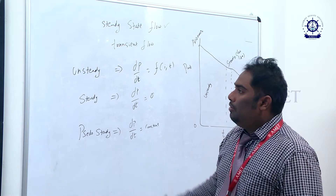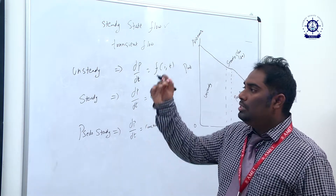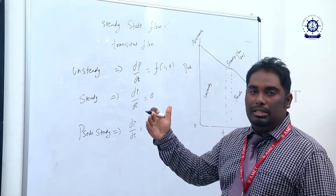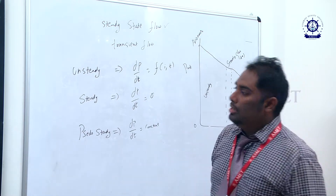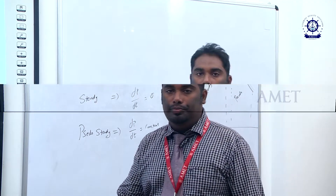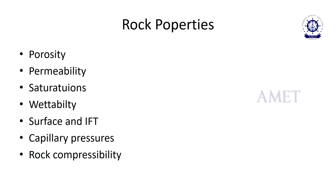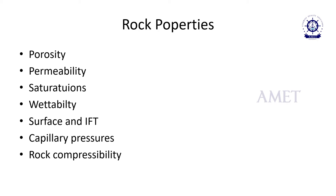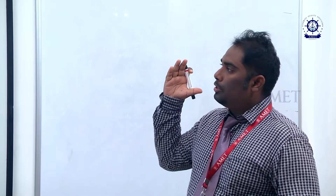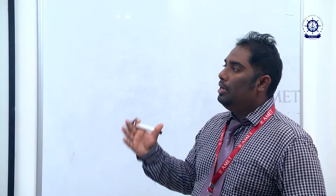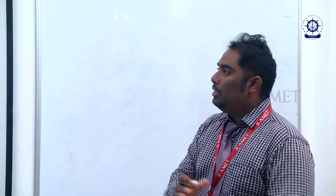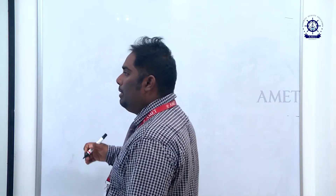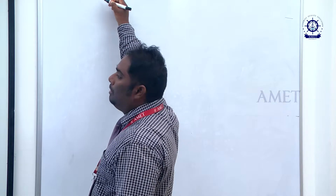This is how the flow regimes occur inside a well — unsteady state starts first, followed by steady state, then pseudo steady state. Now, rock properties: this rock represents reservoir rock where crude oil will be stored. Before exploiting any reservoir rock, we should understand the properties of that rock. These are: porosity, permeability, saturation, wettability, surface and interfacial tension, capillary pressures, and rock compressibilities.